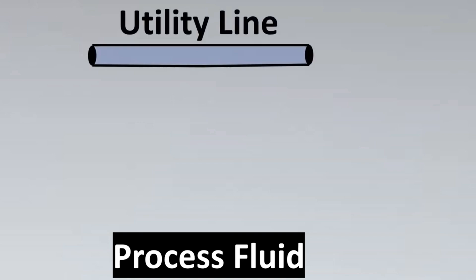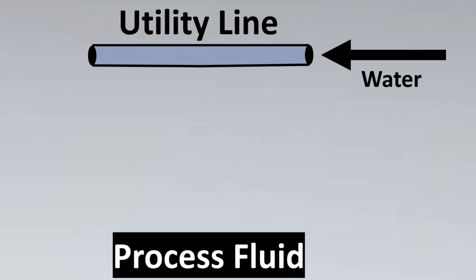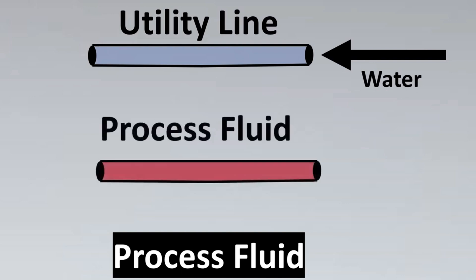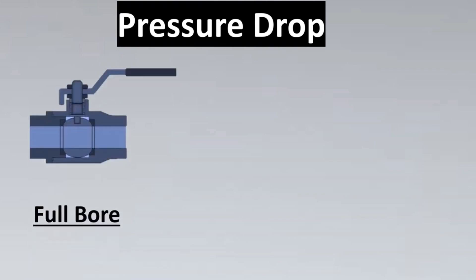The next case is the process fluid. As a rule of thumb, for utility lines carrying water, it is generally recommended to go with a reduced bore valve — this depends on the client's design basis, but you can usually save project cost this way. For process fluids, it depends on how critical they are — for example, certain acids or viscous fluids may require full bore valves.